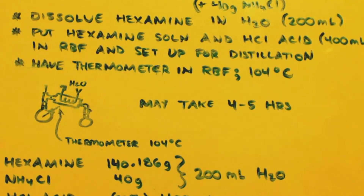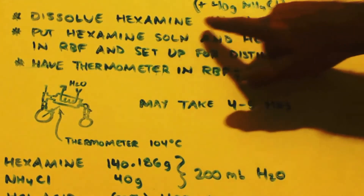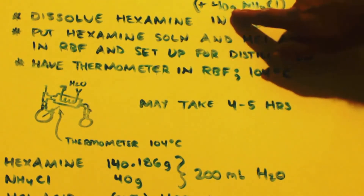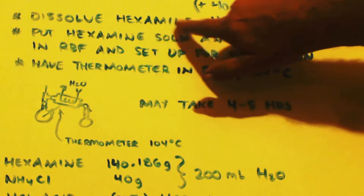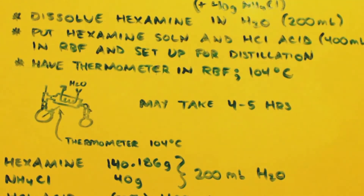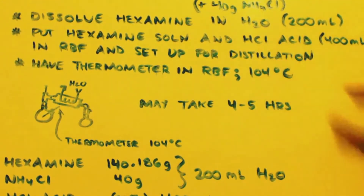So how do you make it? First of all, you're going to dissolve some hexamine and 40 grams of ammonium chloride — it's kind of debatable whether to add it, but I think it would be better if you did — into 200 milliliters of water. Stir it, heat it up if needed, get it dissolved. Then put that hexamine solution and 400 milliliters of hydrochloric acid together in a round-bottom flask that's already set up for distillation.